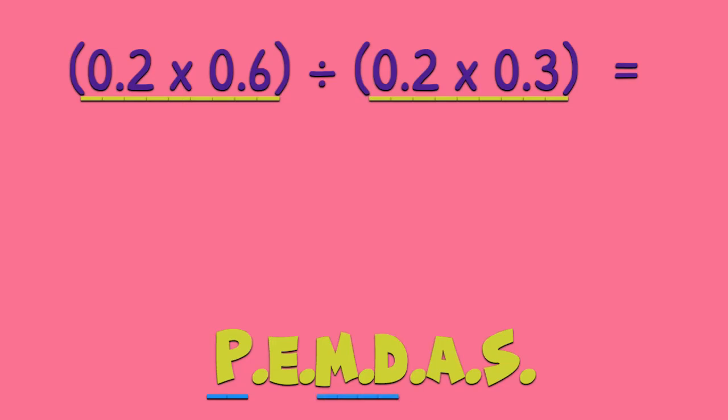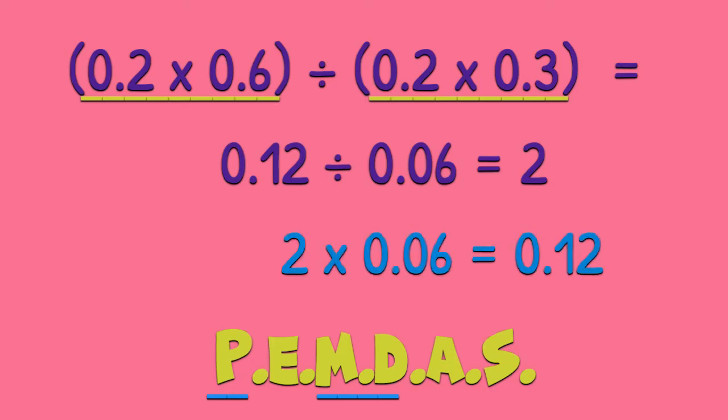2 tenths times 6 tenths is going to be 12 hundredths. And how many 6 hundredths make 12 hundredths? The answer is 2. And here is the inverse just to check your answer, which I recommend you do every time.